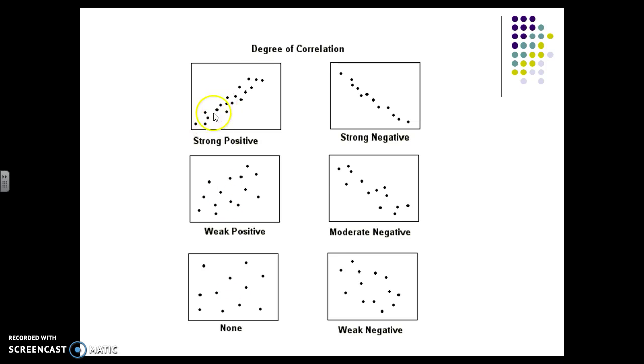And here's what those look like. So a strong positive correlation, we have all the dots right on a nice line. Strong negative, again, all the dots are on the line. The angle is just different. A weak positive, so we could draw a line right here, and everything's really far from it.